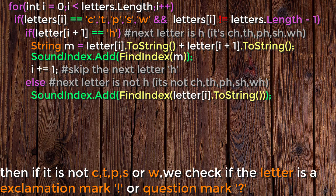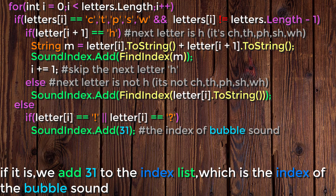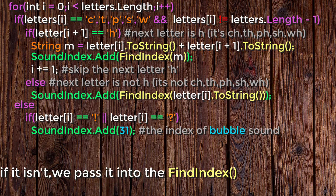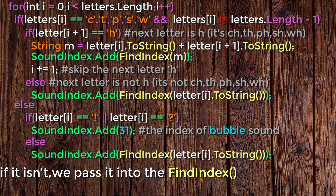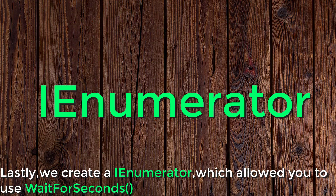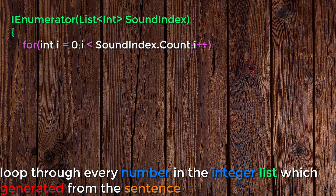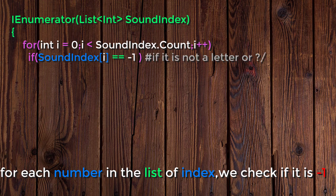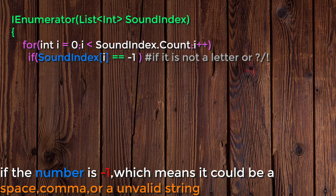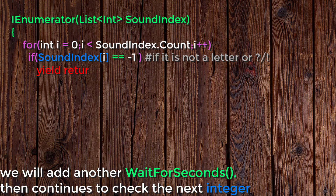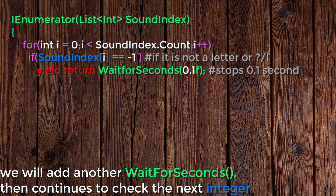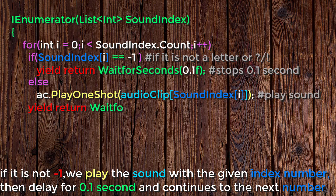If it is not c, t, p, s, or w, we check if the letter is an exclamation mark or question mark. If it is, we add 31 to the index list, which is the index of the bubble sound. If it isn't, we pass it into the findIndex function. Lastly, we create an IEnumerator, which allows you to use the WaitForSeconds method. We pass the integer list of sound indices to the IEnumerator and loop through every number. For each number, we check if it is minus one — if so, it could be a space, comma, or invalid string, so we add a WaitForSeconds and continue. If it is not minus one, we play the sound with the given index number, then delay for 0.1 second and continue to the next number.